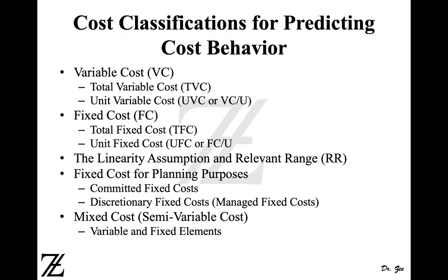Now we are going to discuss the cost classifications for predicting cost behavior. We are going to discuss variable cost and fixed costs, both in total and in unit terms. We are going to discuss linearity assumptions and a relevant range after that. We are going to discuss fixed cost for planning purposes, and then we are going to discuss mixed costs. So let's start with variable cost first.